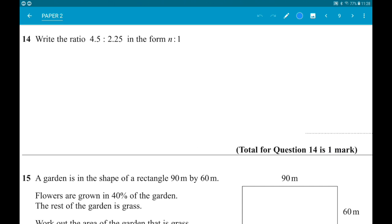Number 14: We have ratio. Write the ratio 4.5 to 2.25 in the form N to 1. We want to turn the right-hand side into one by dividing both parts by 2.25. So we get 4.5 over 2.25 to 1. 4.5 divided by 2.25 is 2, so we have 2 to 1.